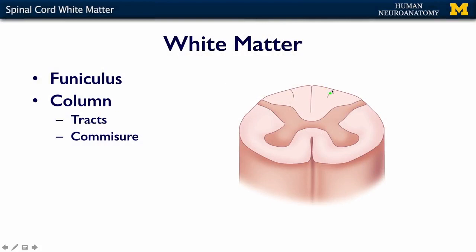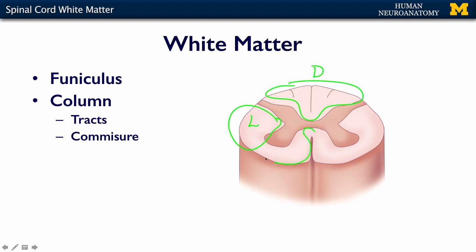In general, we call the big bundles — the whole area — the dorsal funiculus. Funiculus is the term we use for these large zones of the white matter. The lateral funiculus is over here, and the ventral funiculus is in here.